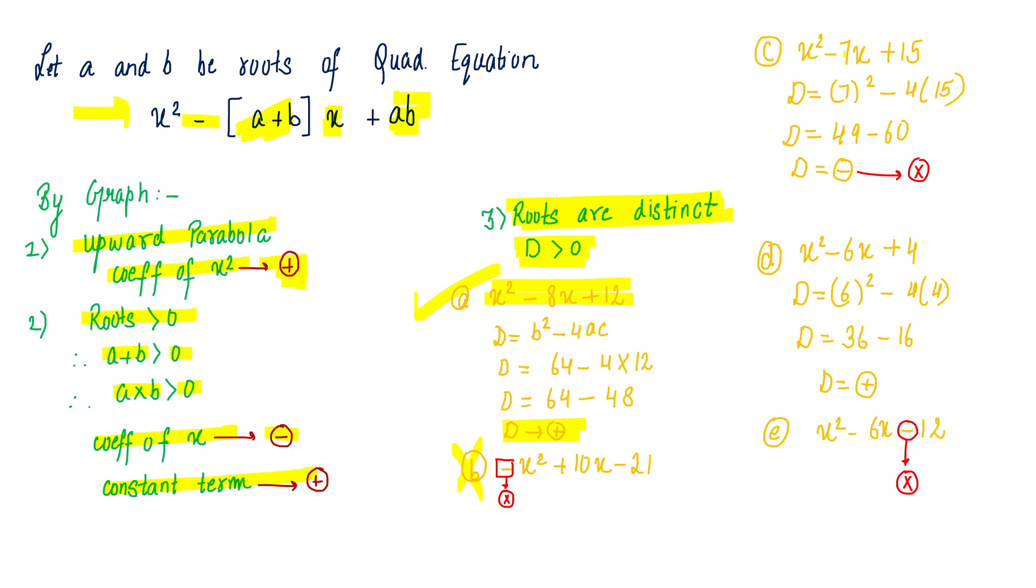Third equation: positive, negative, positive. Three starting conditions are satisfied. Let's calculate the discriminant. But because my D is negative, the fourth condition is disqualified, then C is rejected.